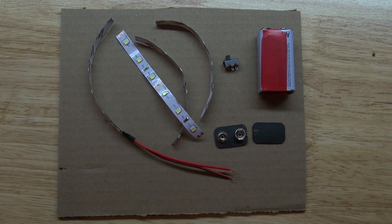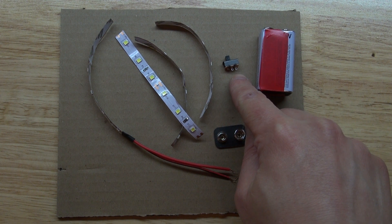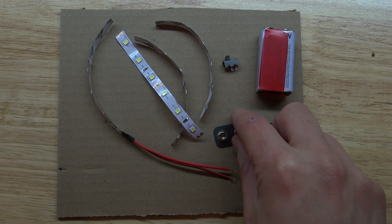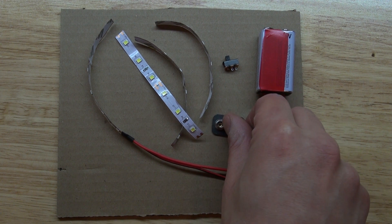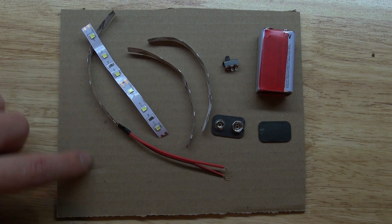And the items that you are going to need is a 9 volt battery, a switch which is optional, a 9 volt battery connector to be able to make a connection to the battery, and some LED tape, and a piece of cardboard.